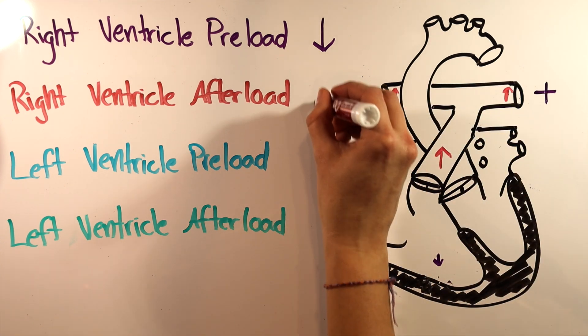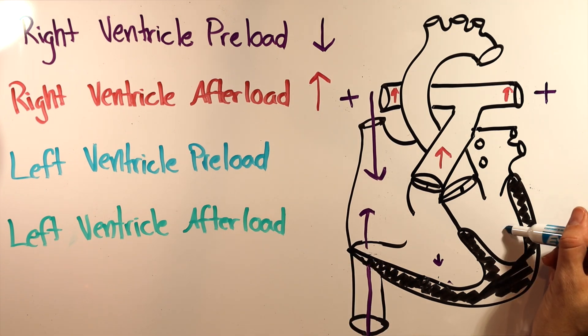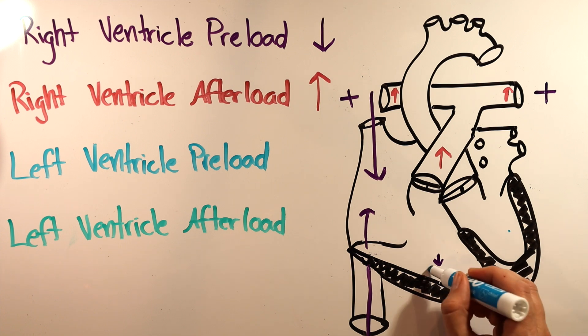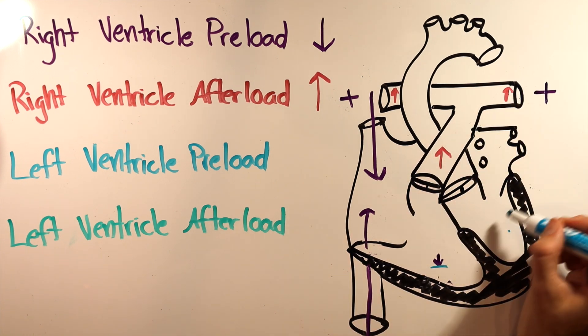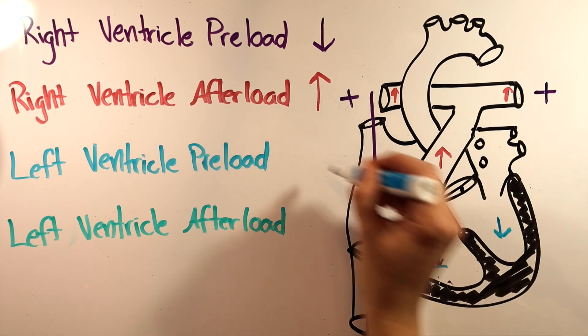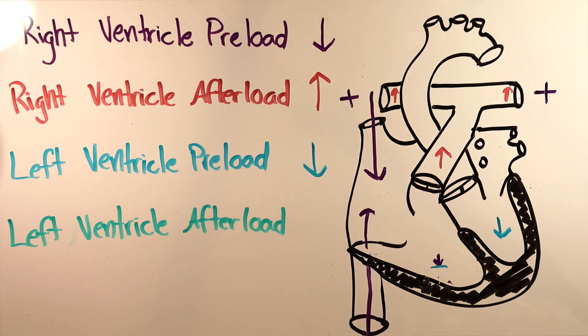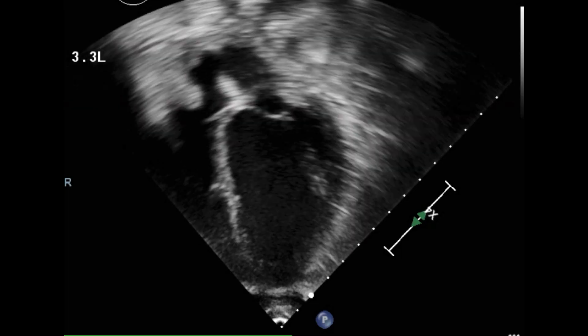So RV afterload increases. Now left ventricular preload. The LV is dependent on the RV for filling. So everything that happens on the right side will be felt on the left side in a few beats. So LV preload goes down, just like RV preload. This is all starting to sound pretty bad for our unhappy heart.